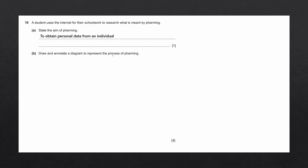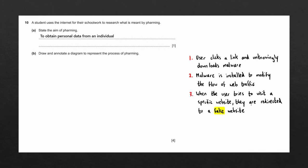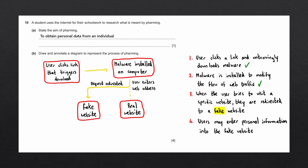Question B asks to draw and annotate a diagram to represent the process of pharming. First, the user clicks a link and unknowingly downloads malware. The malware is installed to modify the flow of web traffic. When the user tries to visit a specific website, they are redirected to a fake website. The user may then enter personal information into the fake website, such as bank details or login details. In the diagram: the user clicks the link triggering the download; malware installs onto the computer; when the user enters a real web address, the request redirects to the fake website; and sensitive information entered is sent back to the attacker.